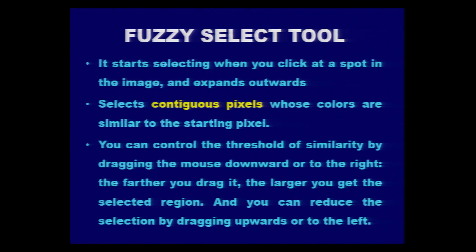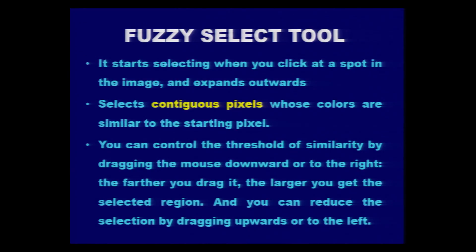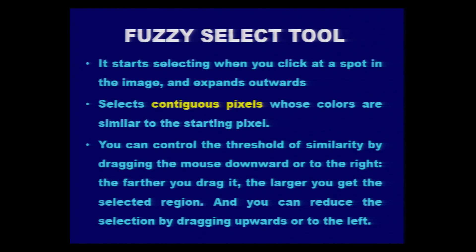This tool starts selecting when you click at a spot in the image and it expands outwards. When you select a particular point, it takes it as the initial pixel color and picks the rest of the pixels of similar color. When you drag towards the right direction, it expands the selection. It selects contiguous pixels whose colors are similar to the starting pixel. This makes the fuzzy select tool a good choice when we have solid color in the background or object.